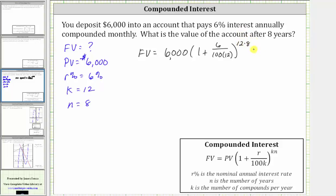Let's do a little simplifying before we go to the calculator. We have the future value equal to 6,000 times the quantity one plus six divided by 1,200, raised to the power of 96.